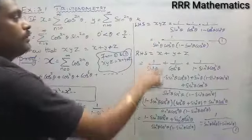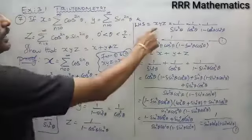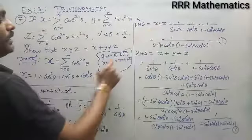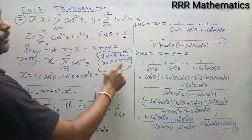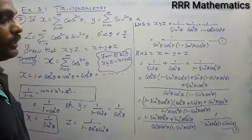From equations 1 and 2 being equal, therefore I can say x into y into z equals x plus y plus z.